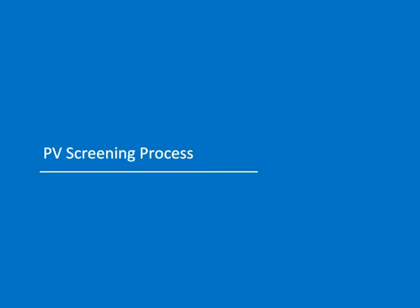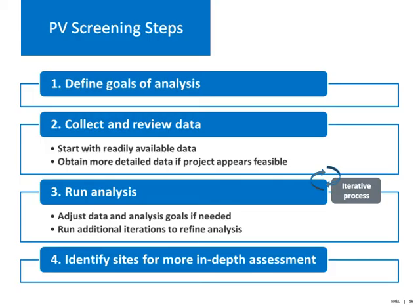We're now going to go over the general PV screening process. You would first start by defining the goals of the analysis. As you learned in Module 1, there are many nuances to renewable energy goals, and these can impact your analysis. Next, you would collect and review your site data — this can be time-consuming, so you can start with readily available data and only obtain more detailed data if the project appears feasible. You would then run the analysis, which is an iterative process where you adjust the data and run additional analysis to refine your results. Finally, you can use this information to identify sites for more in-depth assessment.